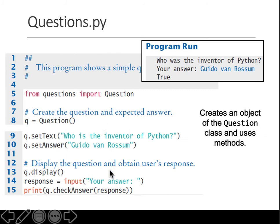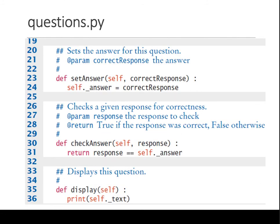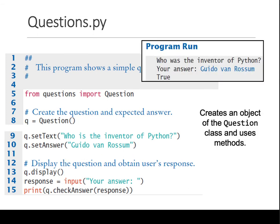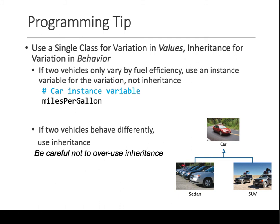Have we implemented any inheritance yet? No — what we've done so far is simple object-oriented programming: create a class, create objects, create methods, and test them. There has been no inheritance. We use inheritance when we expect a variation in behavior of subclasses. If you expect only a variation in values, you use a single class.